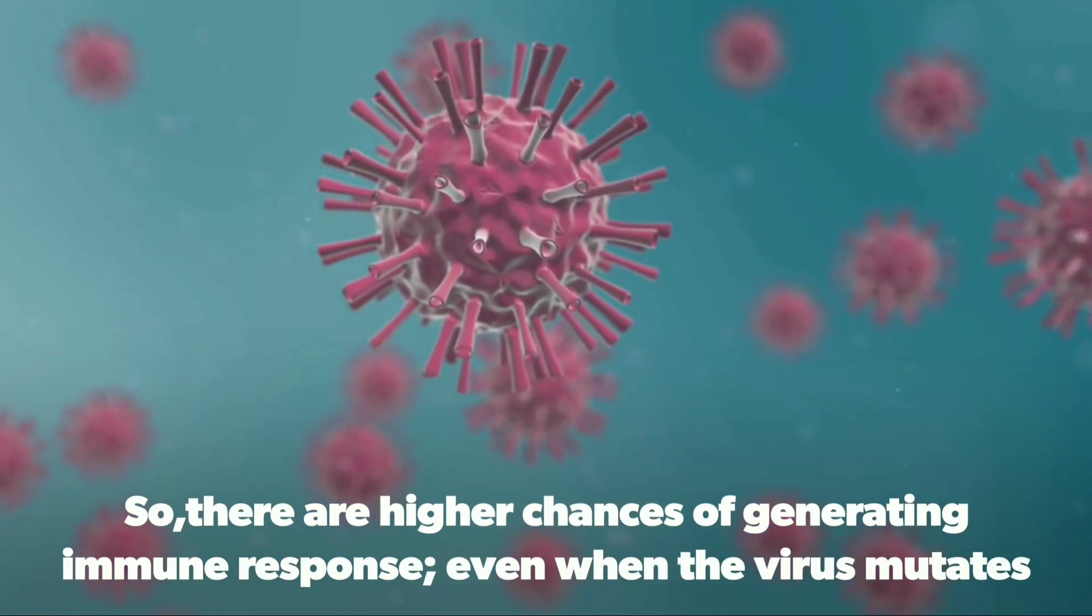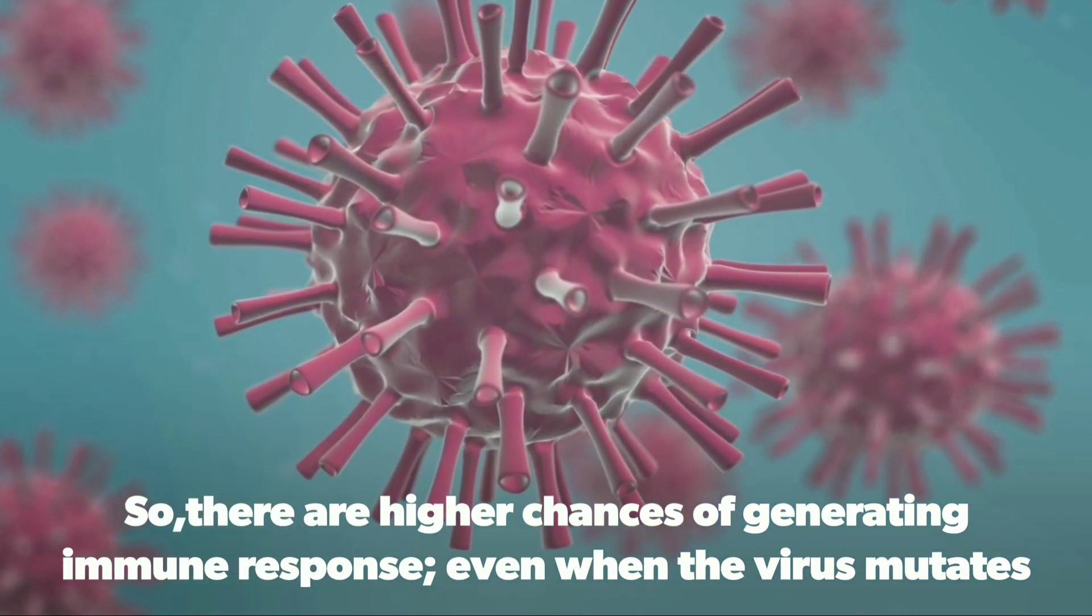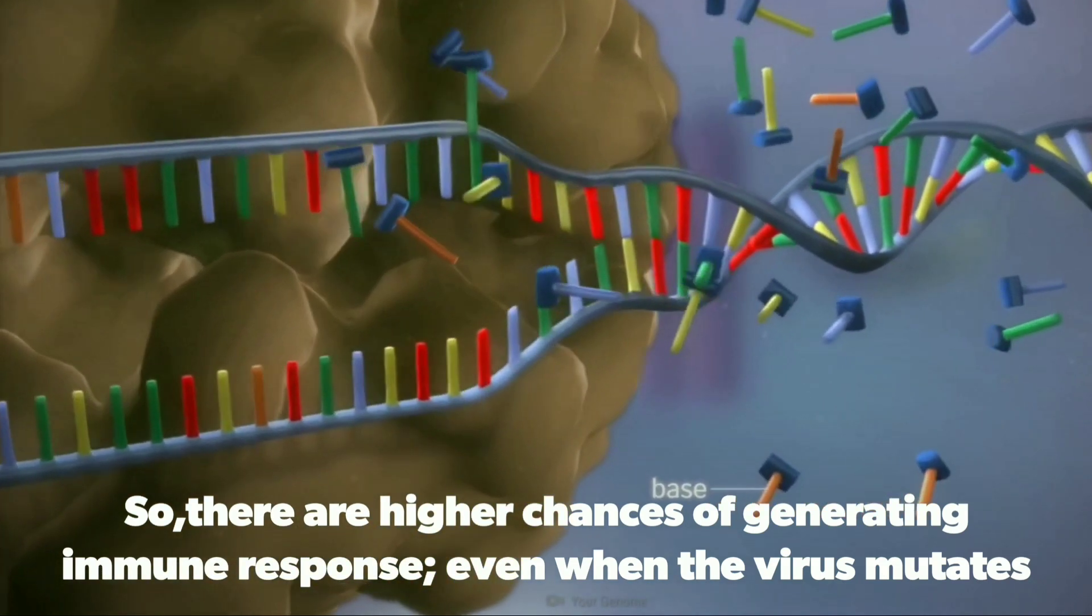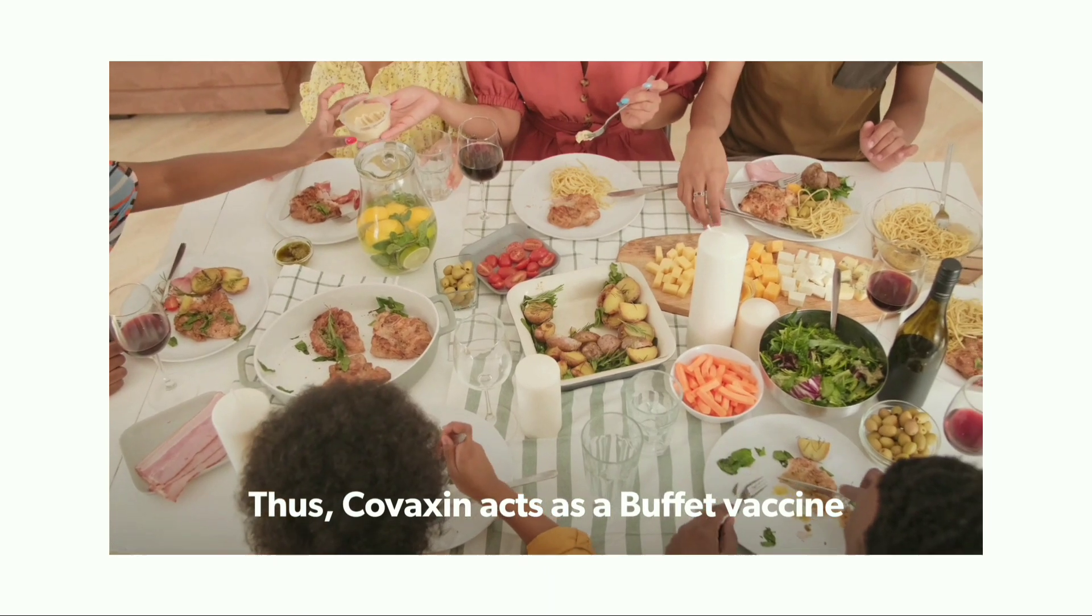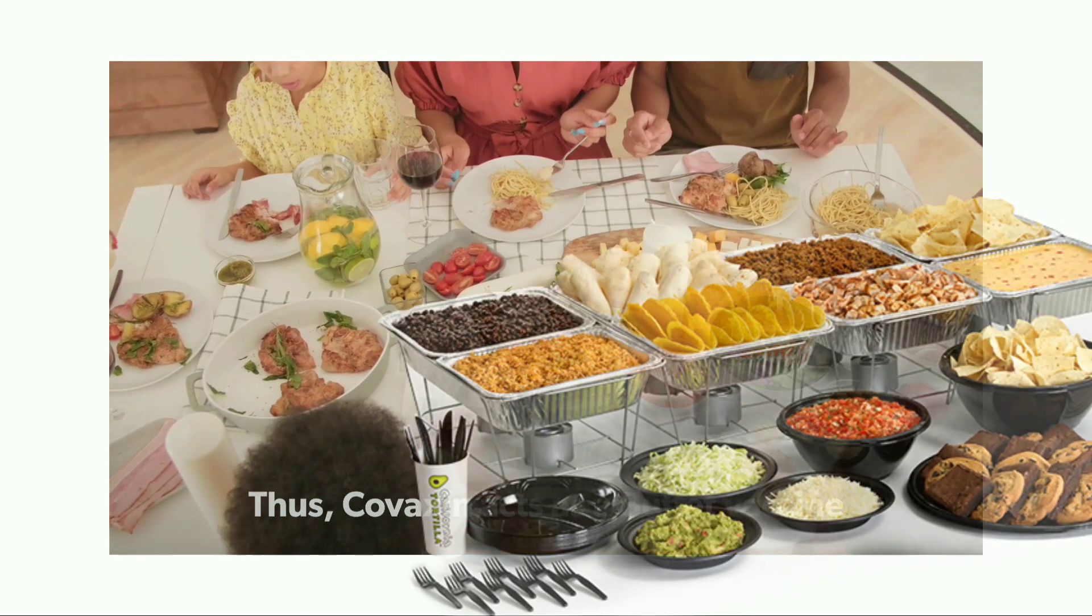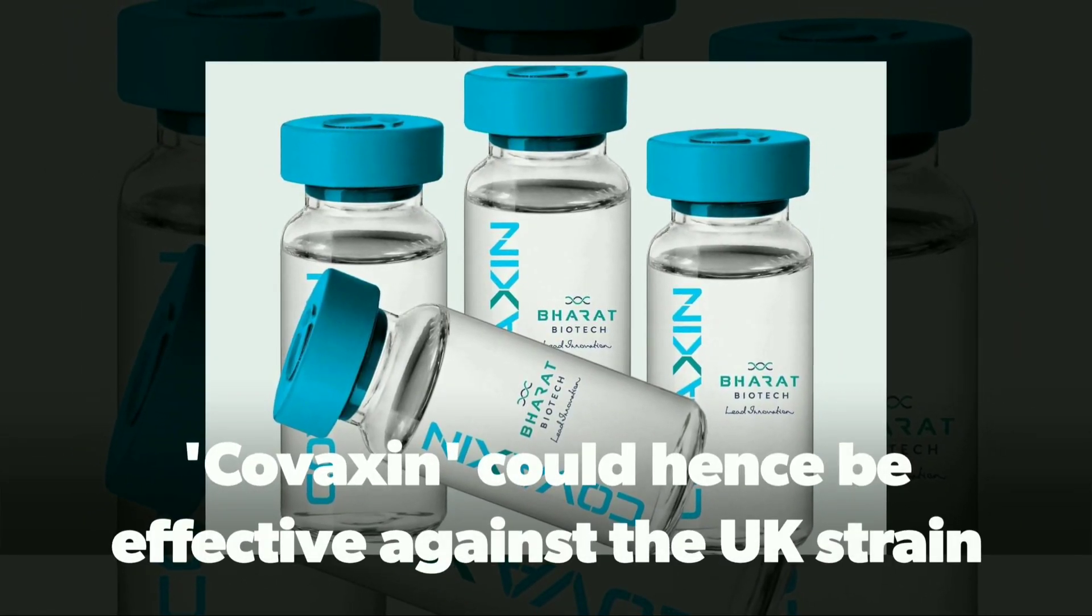The experience shows that the platform of killed or inactivated viruses is capable of generating immune response even when the virus mutates. In simpler terms, the Covaxin platform is like a buffet, which produces a variety of antibodies in the human body even for mutations. Thus Covaxin could work against a mutant variant that sprang up in the United Kingdom.